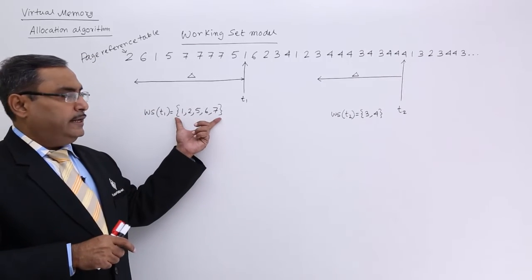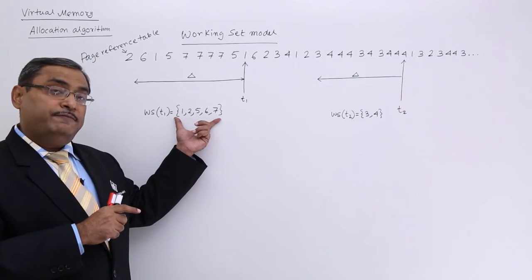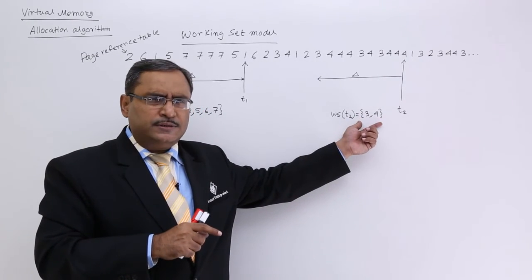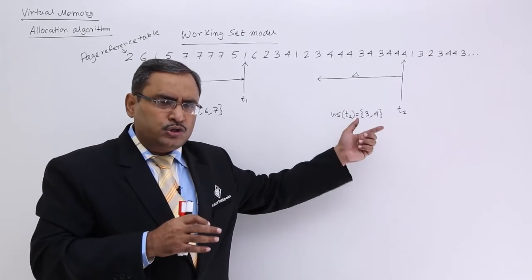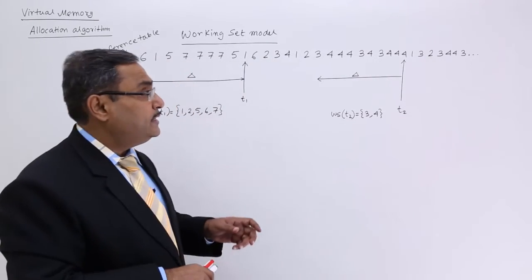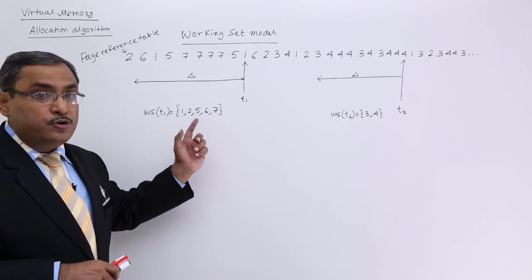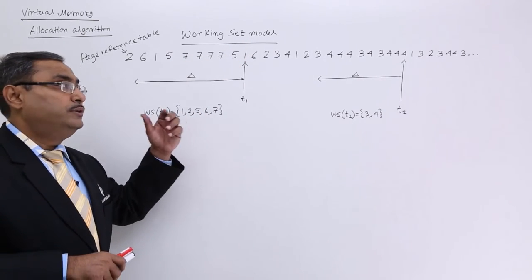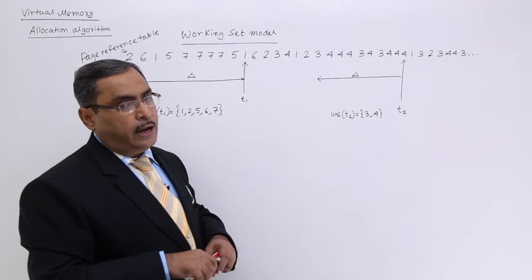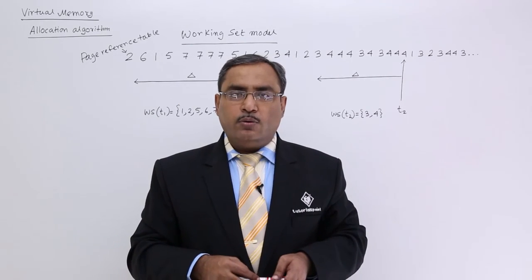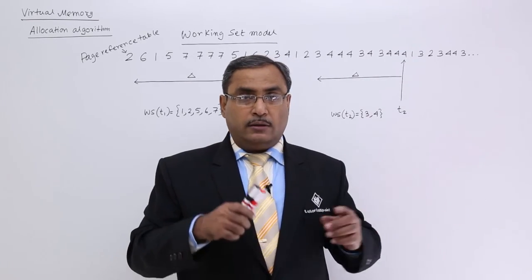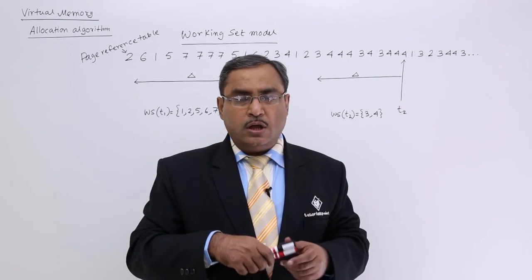For example, if one process initially requires 5 frames but now only needs 2, those 3 freed frames can be allocated to another process — this is global allocation. That is why the working set model is very important; numerical questions may appear on it. I hope you understand frame allocation, the working set model, global allocation, and local allocation. Thanks for watching.